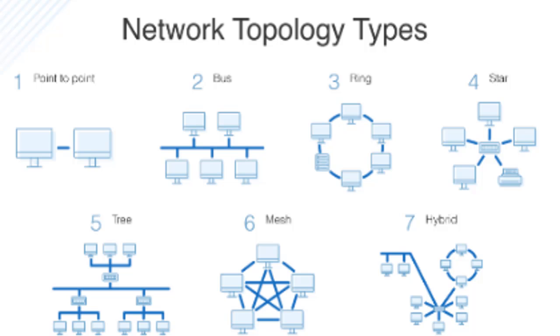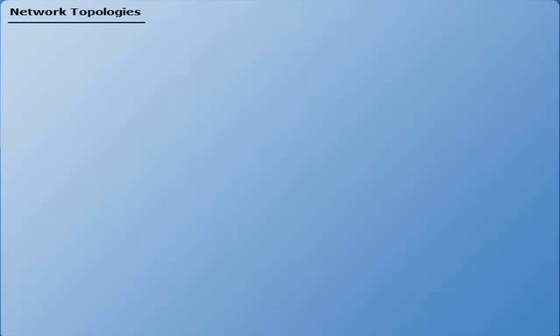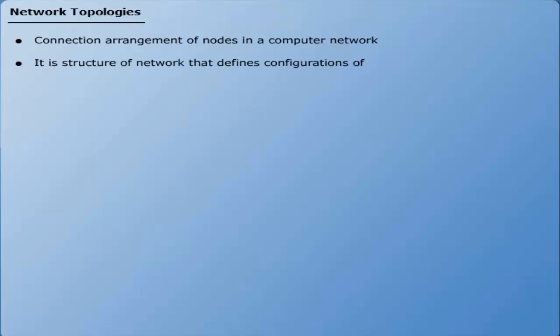Network topologies. Network topology is the connection arrangement of nodes in a computer network. It is the topological structure of a network that defines configuration of cables, computers, and other peripherals.